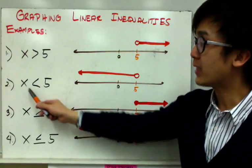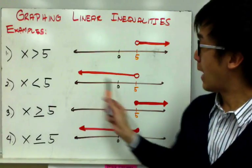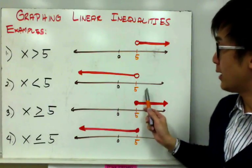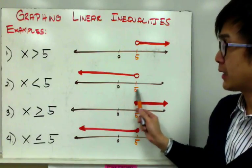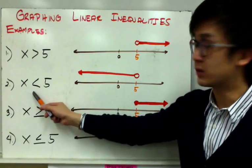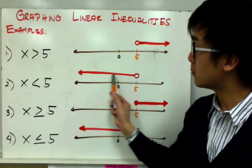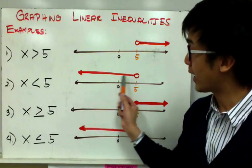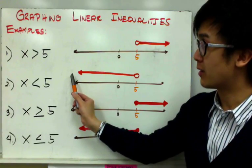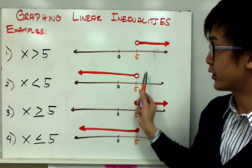If I have x less than 5, I'm going to graph it with my number line. 5 is right here, and since the arrow is pointing towards the left, I'm going to shade my area moving towards the left, and I have an open circle.